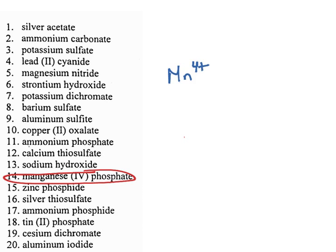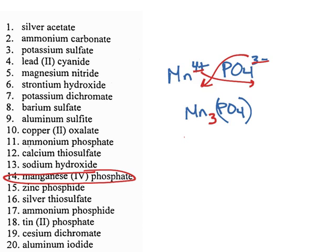Manganese four plus, and phosphate is one of the ions that you have to know from your list. That's PO4 three minus. Again, we take the charges, we flip them to make them subscripts. The Mn is getting a three from the phosphate. The PO4 is getting a new subscript. I don't want to move the four that's there already. Remember that any subscripts that are there to begin with should be there at the end. So the PO4 is going to go in parentheses, and the new subscript of four is going to go outside of it.